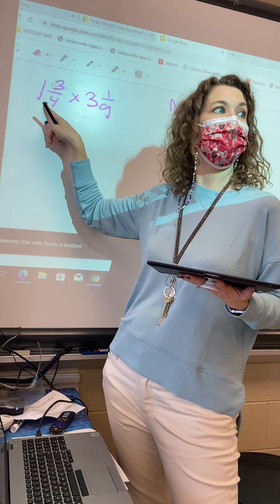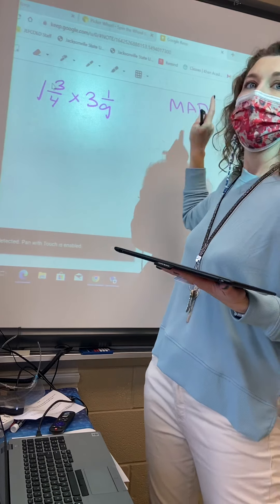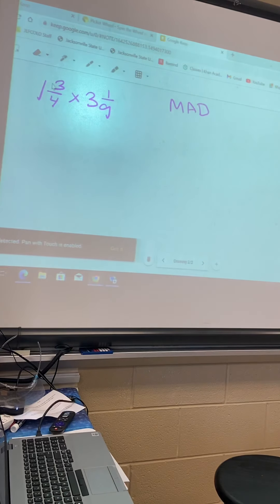So then we're going to add the numerator. So we're going to multiply, add, and then we're going to write the problem as a division problem. Right. So what would 1 and 3 fourths be? We multiply, add, what do you get? You get 7 over 4.